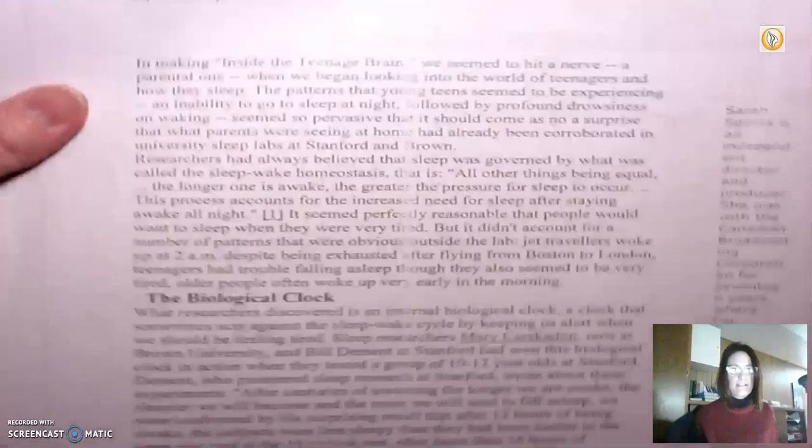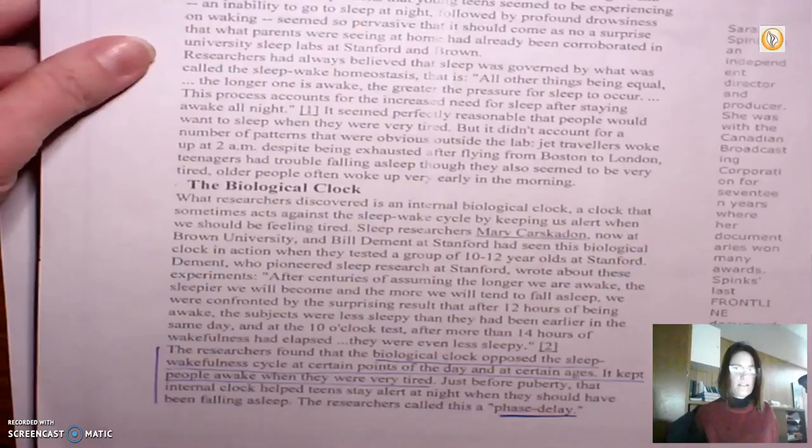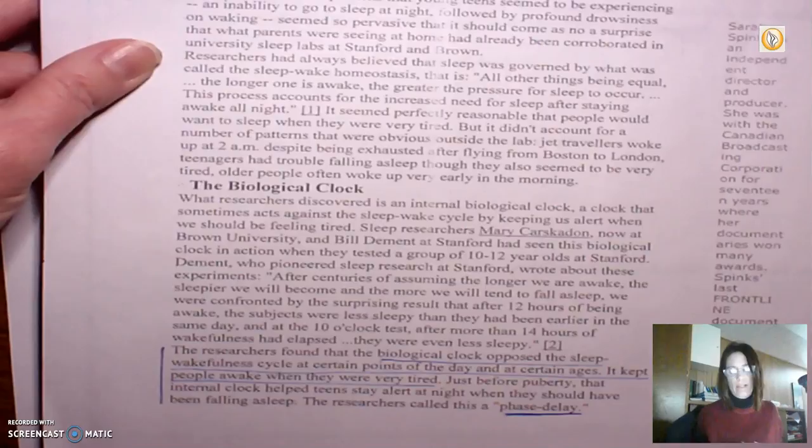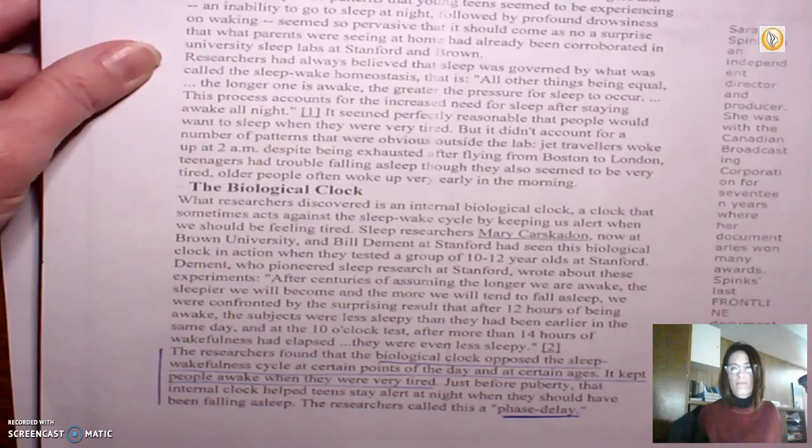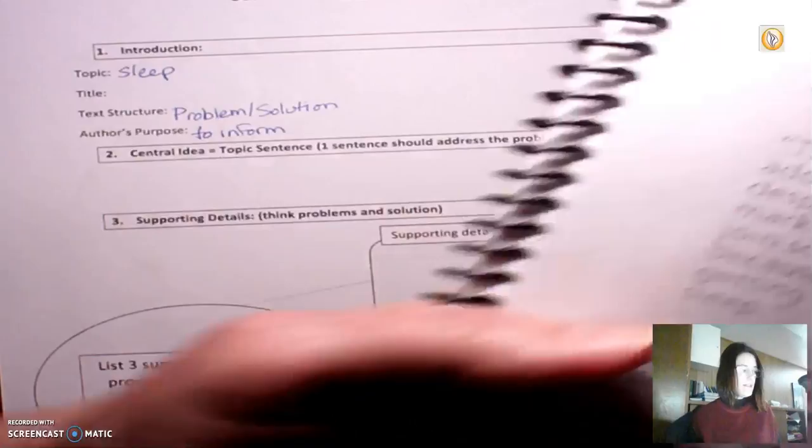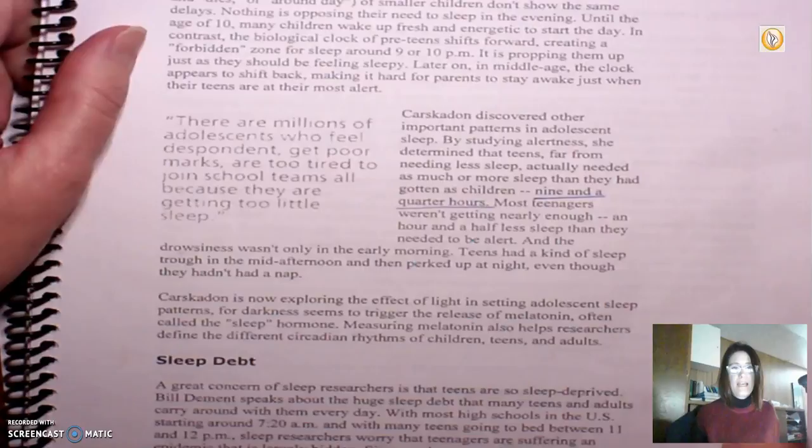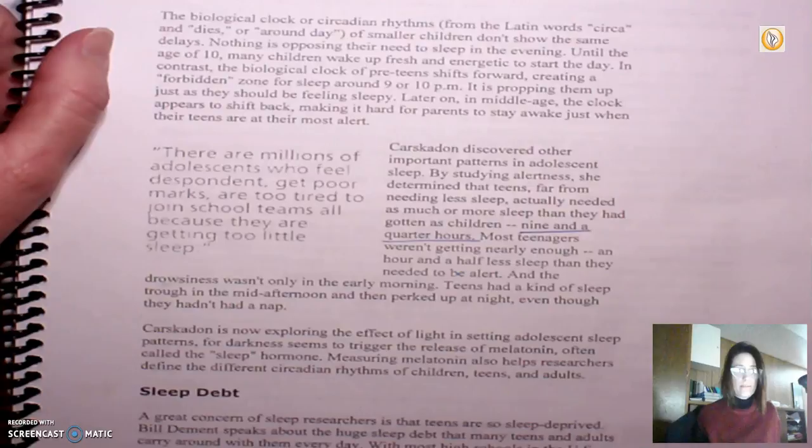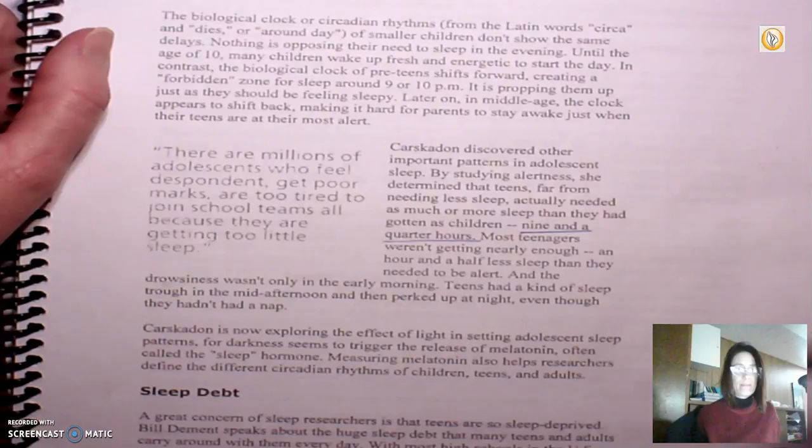So I'm just going to quickly summarize this. And I think that the gist of it is that researchers always believe that the more tired you were, the more sleep that you needed or that the body would automatically allow you to get enough sleep to replenish. And what they've discovered with research is that teens, especially between the ages of 10 and 12, are experiencing something called phase delay, which keeps them awake when they should be tired, which is a huge problem because teens need about nine and a half to a nine and a quarter hours of sleep a night. So among other issues, such as after school activities, early school start time, teens are having a hard time getting that enough sleep. And then they end up in what the article raises as sleep debt.